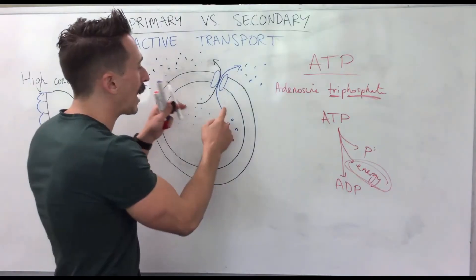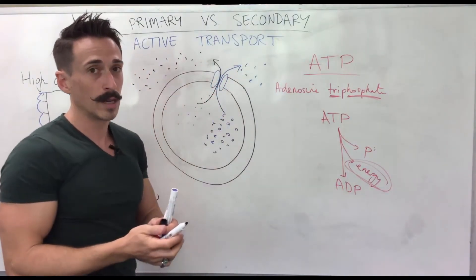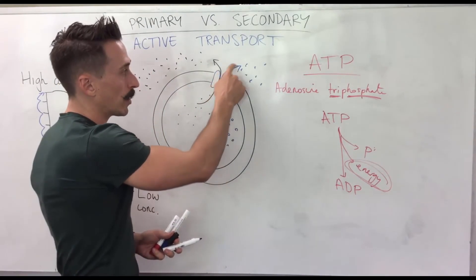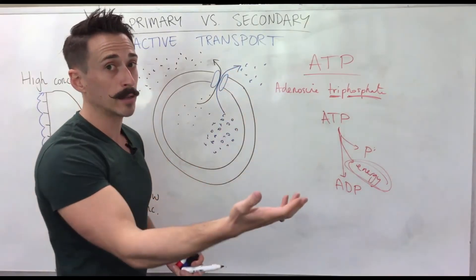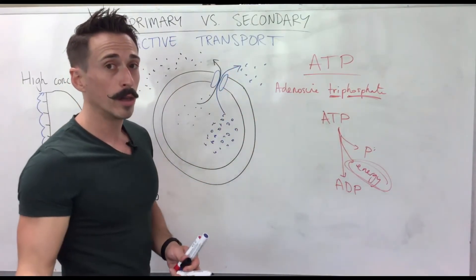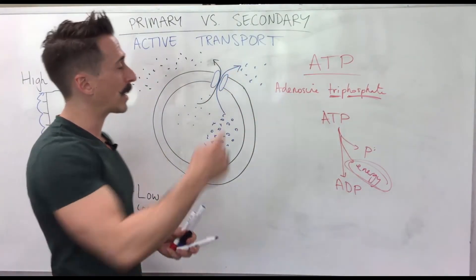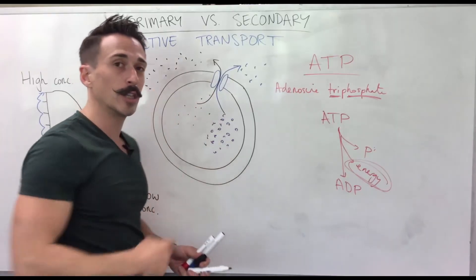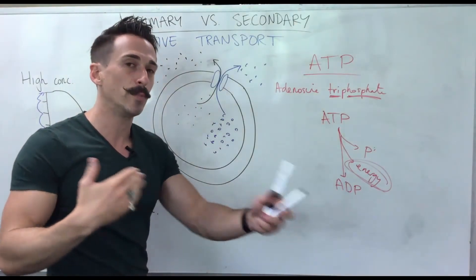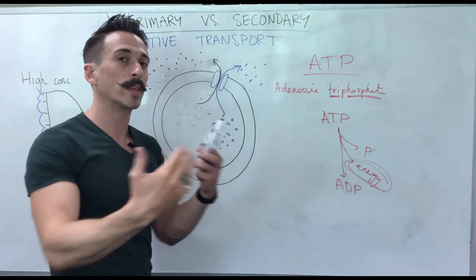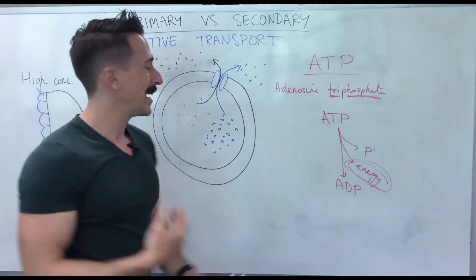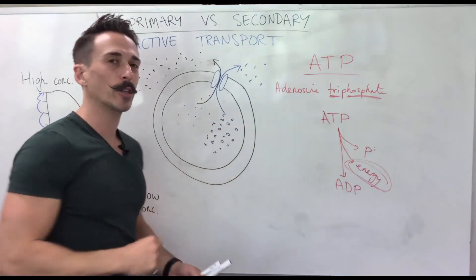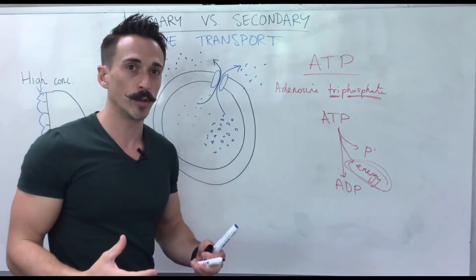In secondary active transport, the solutes don't have to go in the same direction. The substance going down its concentration gradient could go out, while the piggybacking solute goes in the opposite direction — inside. This is called antiport, where they go in opposite directions.